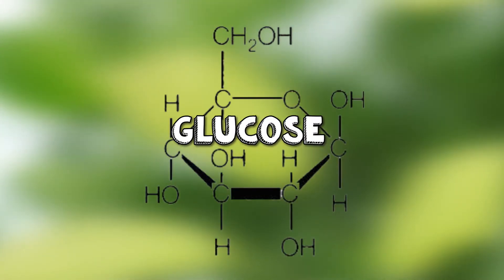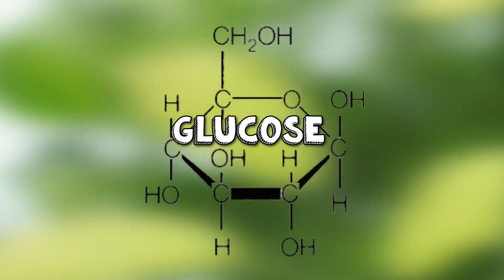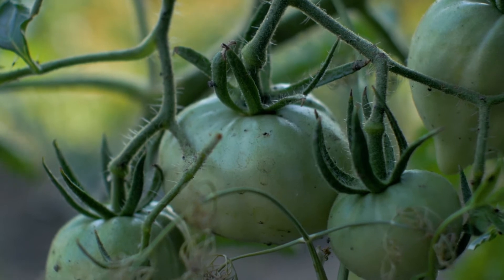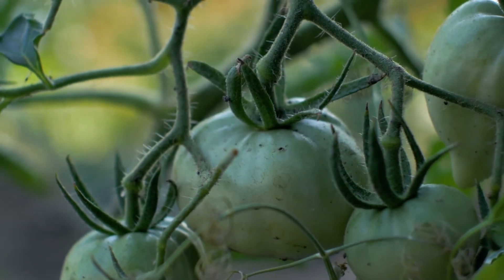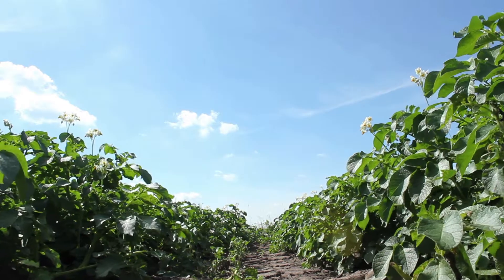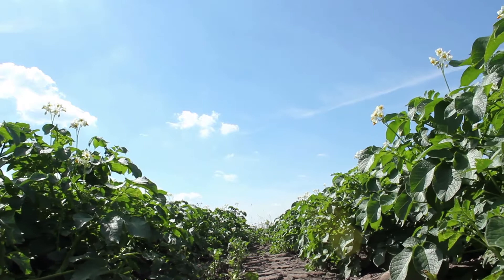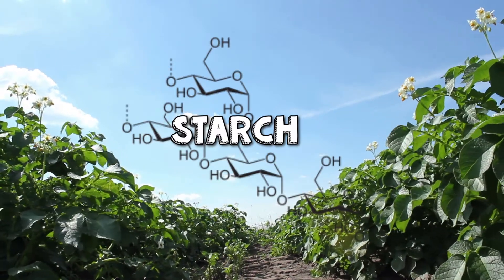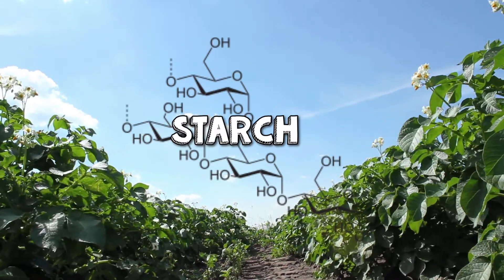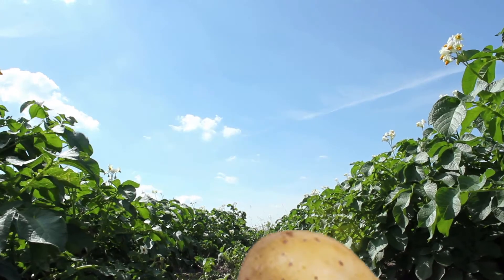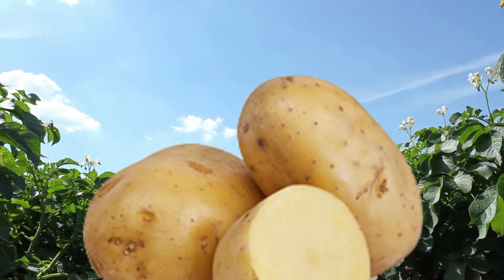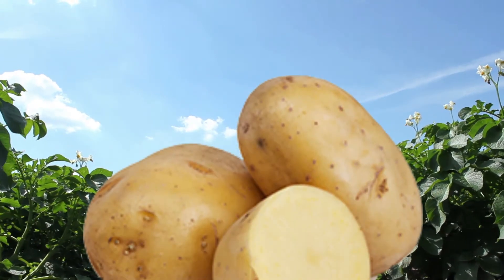Glucose is the main building block for creating everything that the plant needs to live and grow. Here's what plants do with all the glucose that isn't used in respiration: join a load of glucose molecules together and you've got starch, which the plant can use as an energy store. You'll see this in potatoes, for example, where the plant has made a big lump of starchy carbs that it can save for later.